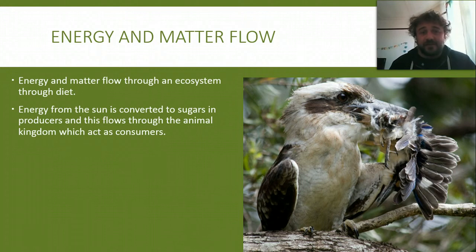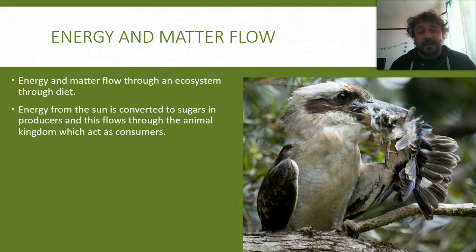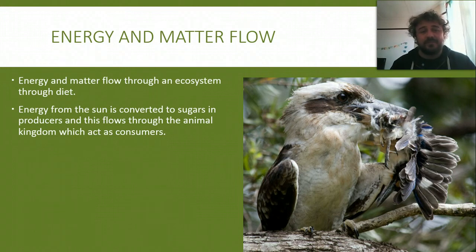Energy and matter flow through an ecosystem through the diets of different animals and plants too, for that matter. Energy from the sun is converted into sugars in producers, and this then flows through the animal kingdom, which act as consumers — so all the animals act as consumers.